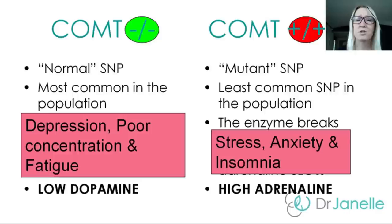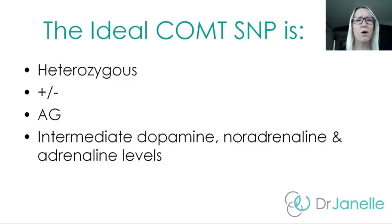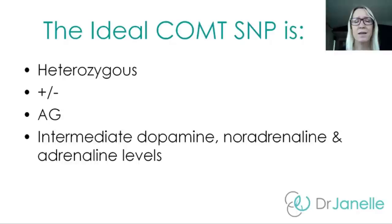So if having two copies of the normal SNP can raise your risk of depression, poor concentration and fatigue, and having two copies of the mutant SNP can lead to increased risk of stress, anxiety and insomnia, then what's the ideal scenario? The ideal scenario is that you're heterozygous for COMT. Being heterozygous means you have an intermediate level of dopamine and noradrenaline — much better than having too much or too little.